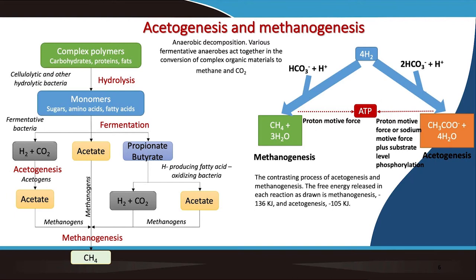Complex polymers like cellulose, polysaccharides, and proteins are broken down as bacteria extrude cellulolytic and hydrolytic enzymes. These bacteria break down the polymers into their monomeric units — sugars, amino acids, nucleotides, and fatty acids — by hydrolysis reactions. These monomeric units are then fermented by various groups of fermentative bacteria.